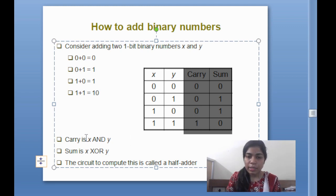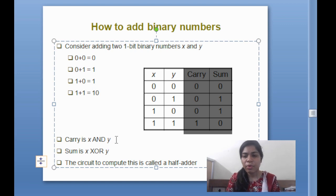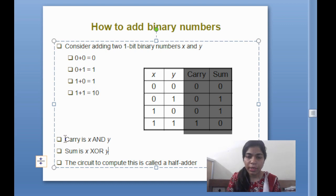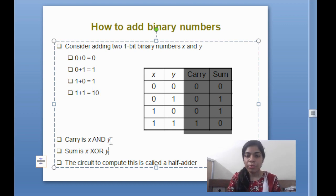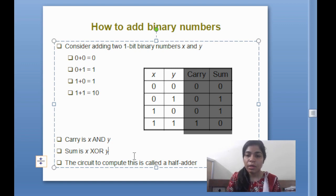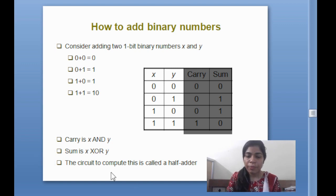Carry is X AND Y. From there we can say the expression for carry will be X AND Y — that is the AND of the inputs — and sum will be X XOR Y, that is the XOR of the inputs.